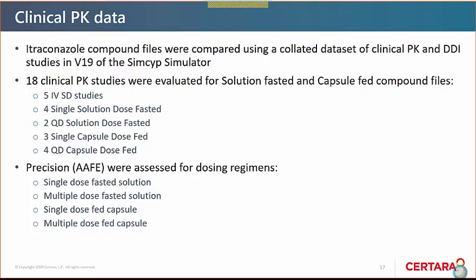The AstraZeneca model for itraconazole uses the full PBK model and captures the elimination of itraconazole quite nicely for the parent, although clearance is maybe a little bit higher especially at the terminal phase. AUC and clearance are captured quite nicely for both itraconazole and hydroxy-itraconazole. The IQ file uses the minimal model with the single adjusting compartment. It's not fitting the profiles quite as well as the AstraZeneca model, but gives the general fit against the elimination of itraconazole, with a slight over-prediction for formation of hydroxy-itraconazole after an IV dose.